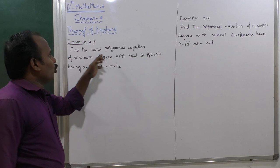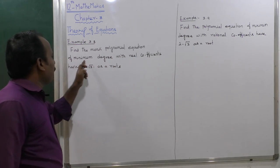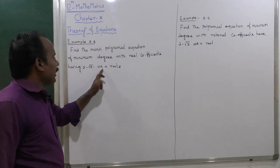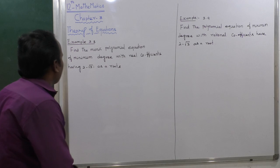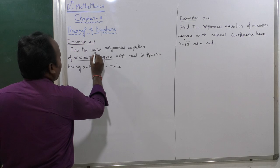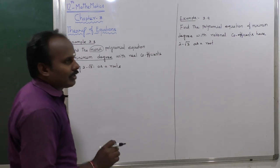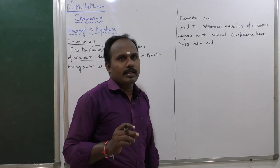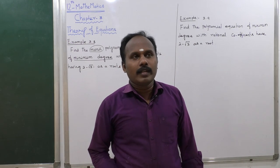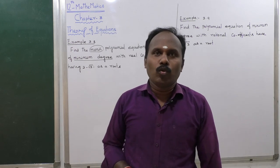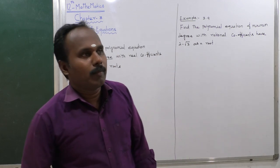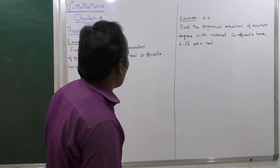Example 3.8: Find the monic polynomial equation of minimum degree with real coefficients having 2 minus root 3 i as a root. We need to find the minimum degree monic polynomial. A monic polynomial is a one-variable equation of the form ax squared plus bx plus c equal to 0, as opposed to a two-variable equation of the form ax plus by plus c equal to 0.